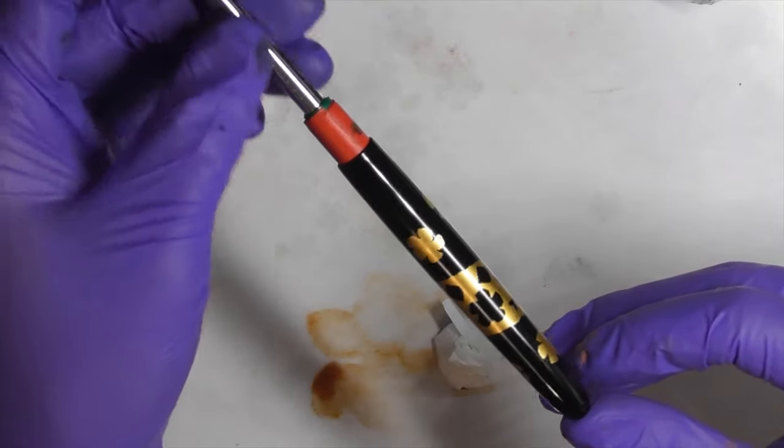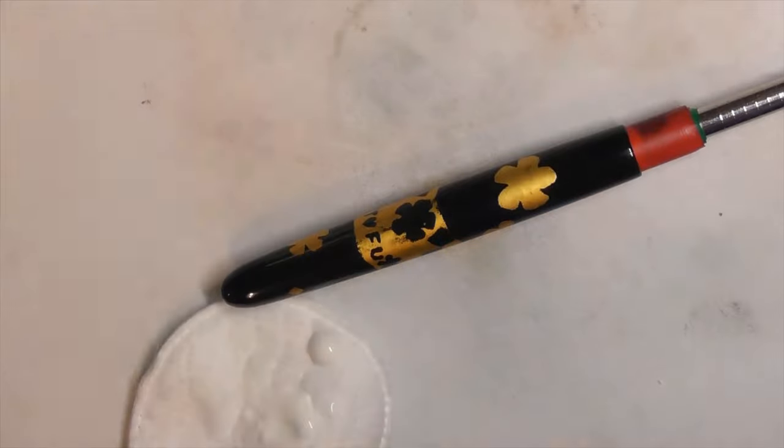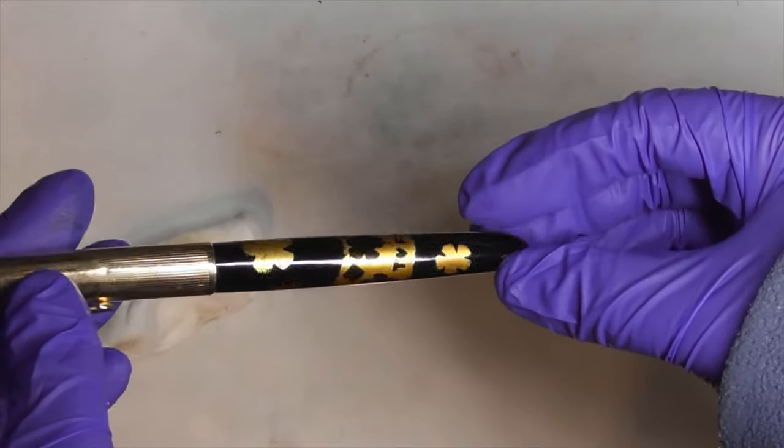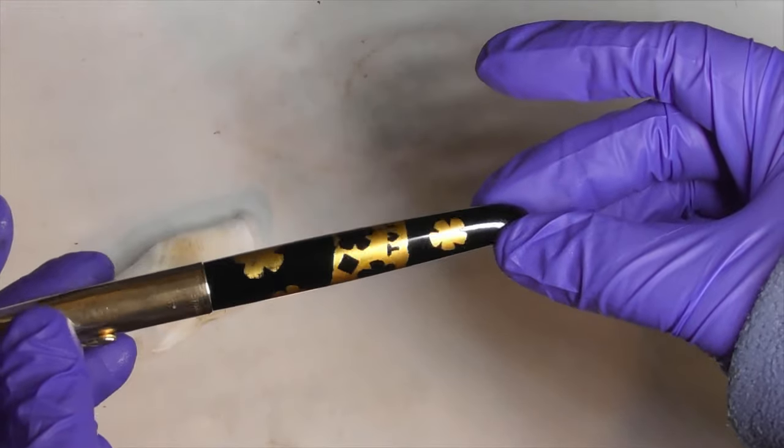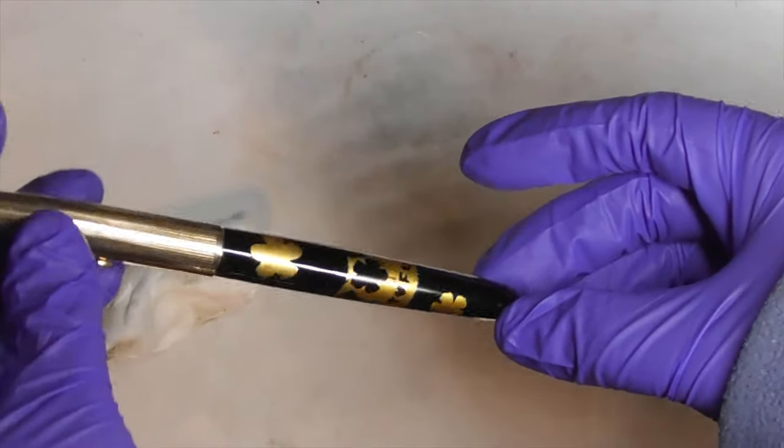Step 18: Finally, lightly buff the pen to high gloss using a car polishing compound. Look at the beautiful 24 karat gold tofu and flower pattern. Step 19: There's my name, meow.